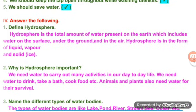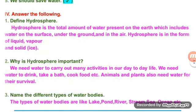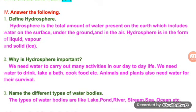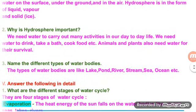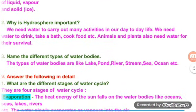Why is Hydrosphere important? We need water to carry out many activities in our day to day life. We need water to drink, take a bath, cook food, etc. Animals and plants also need water for survival. Name the different types of water bodies. The types of water bodies are lake, pond, river, stream, sea, ocean, etc.